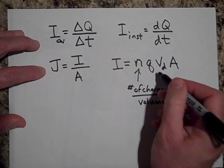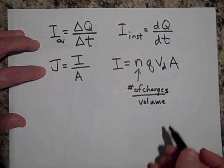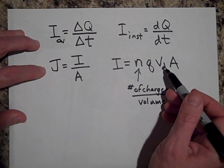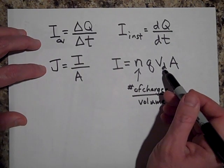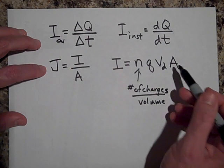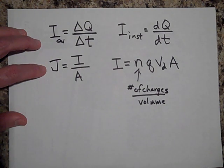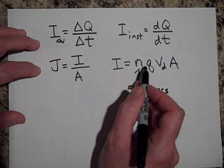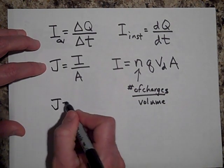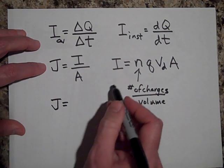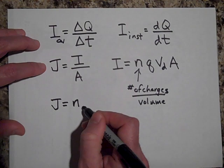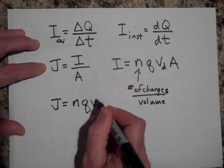And we also learned that I is dependent on the drift velocity. By this equation, it's going to be NQ drift velocity times A. So this N is the number of charges per volume. The Q is the amount of charge. The V is the drift velocity, a small number, maybe a few centimeters per second. And the A is the cross-sectional area of the wire.